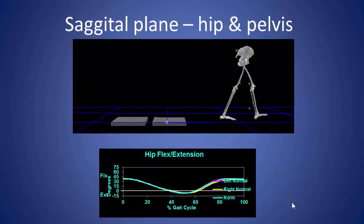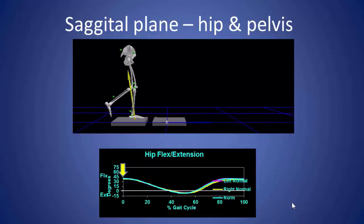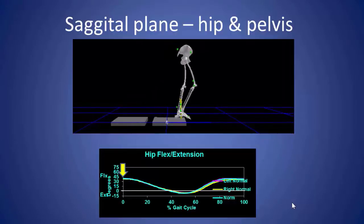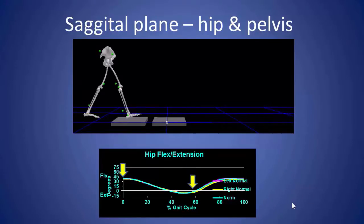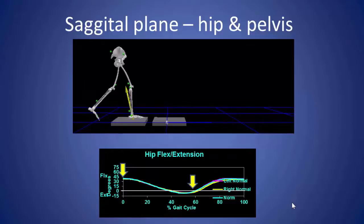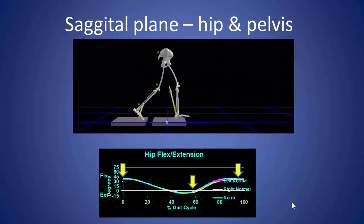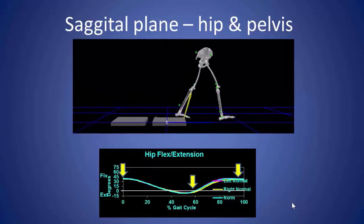So this is the graphic representation of what you're seeing visually. And you can actually, if you have a gait lab or look at gait lab studies, see the actual degrees of flexion-extension. So you start stance phase and maximum flexion. You progress to maximum extension at the end of stance phase, and then flex through swing phase so that you can begin the next gait cycle. So that's the hip.